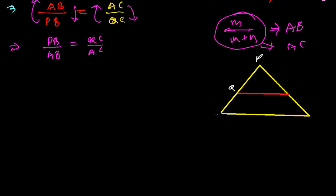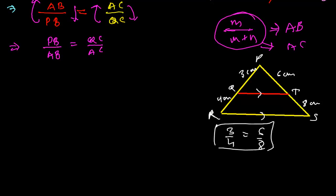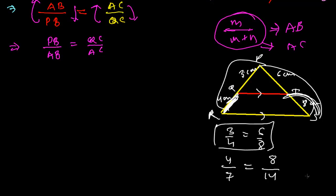For example, in triangle PRS with a parallel line, suppose one segment is 3 cm and the other is 4 cm, with corresponding segments 6 cm and 8 cm. Initially we wrote 3/4 = 6/8. Now we can also write 4/(3+4) = 4/7 equals 8/(8+6) = 8/14. Both give the same ratio. This is another form of the corollary.